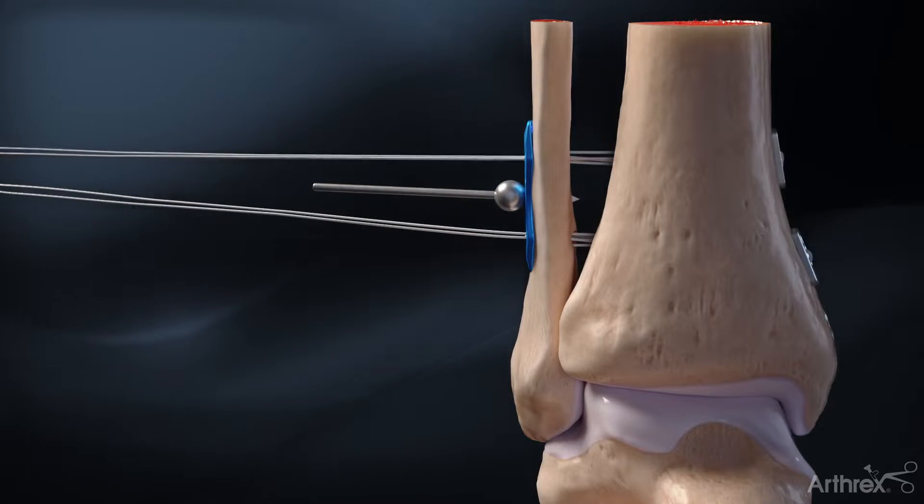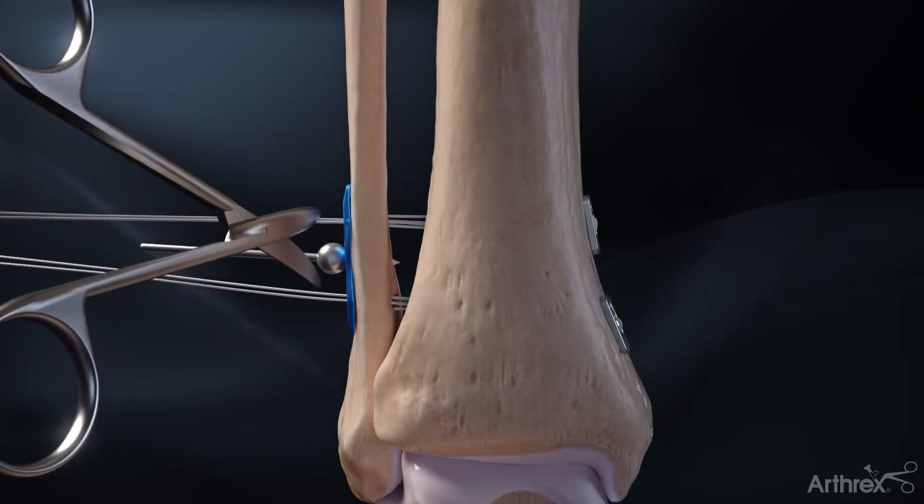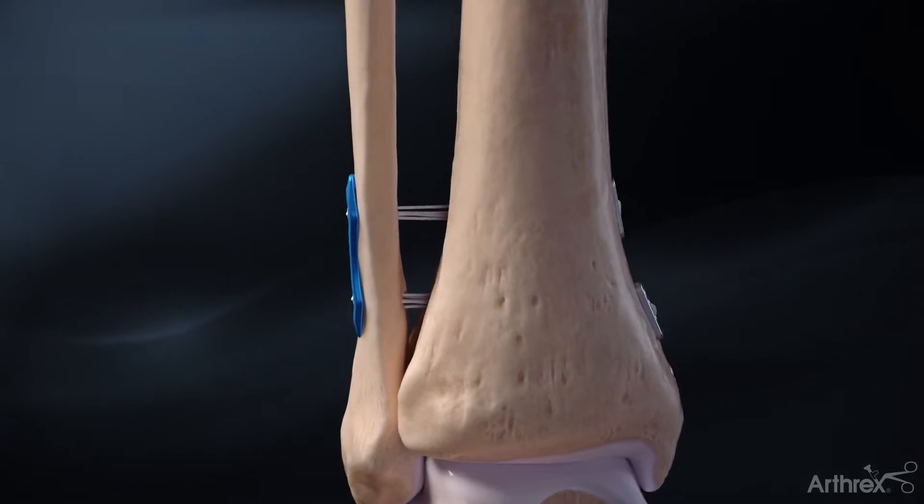A second syndesmosis tightrope is inserted in the same fashion. The suture tails are cut flush. Fixation is complete.